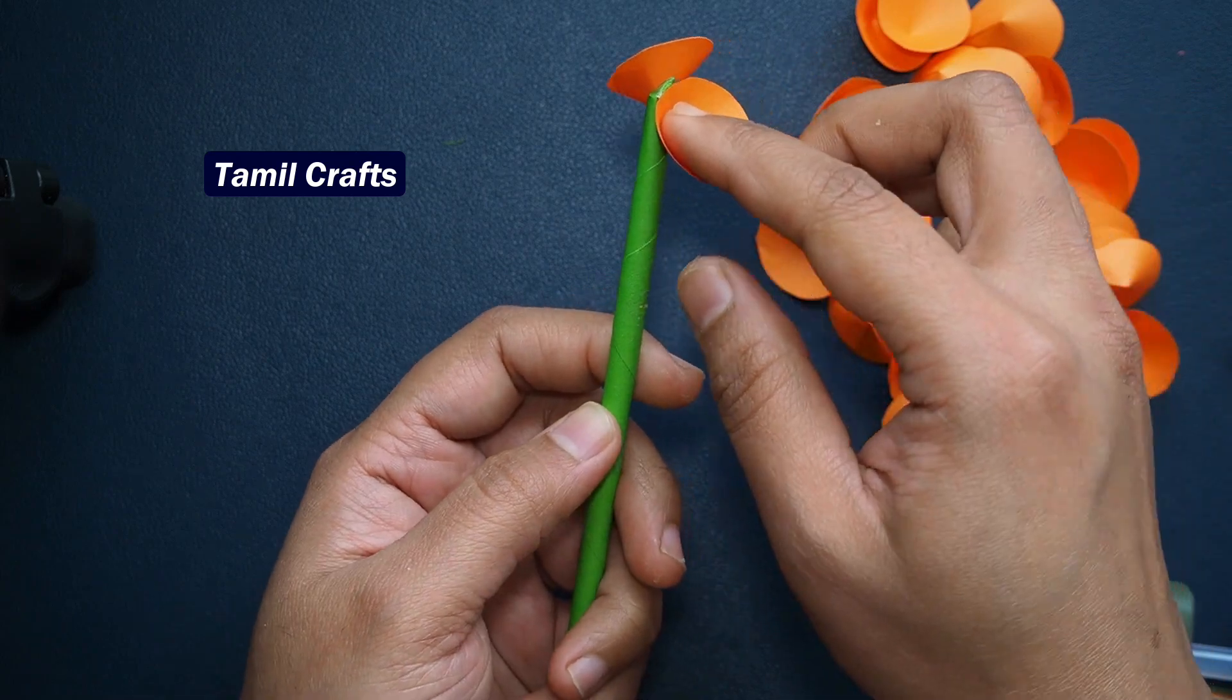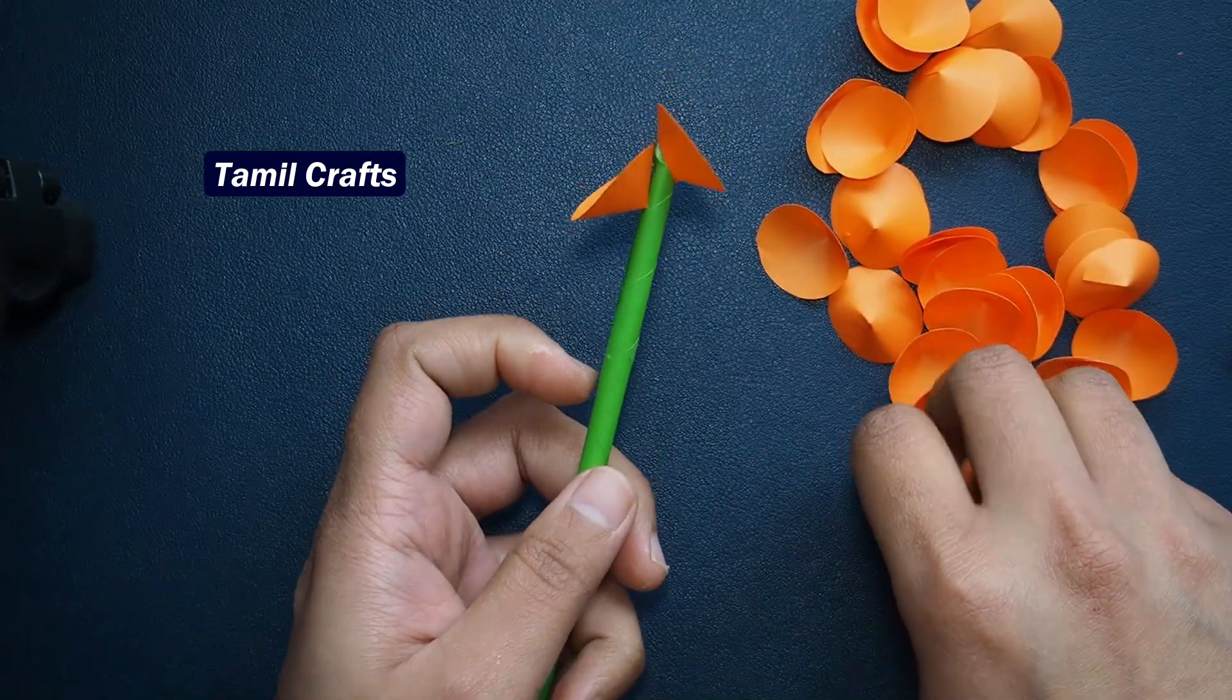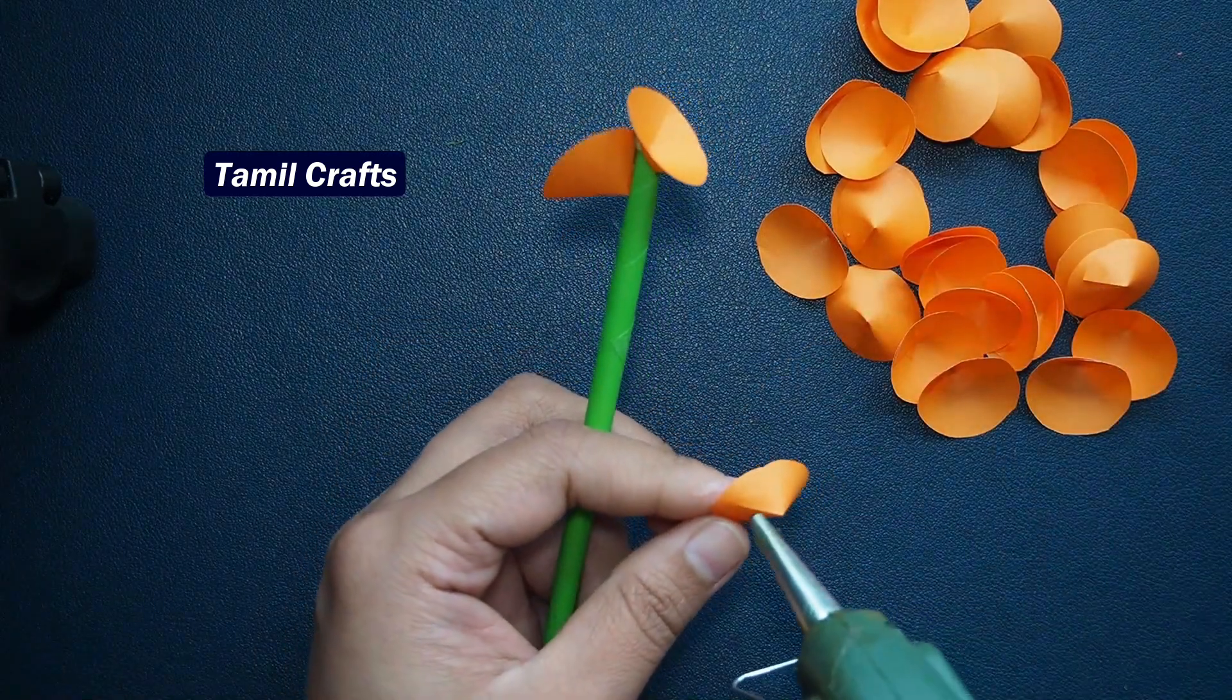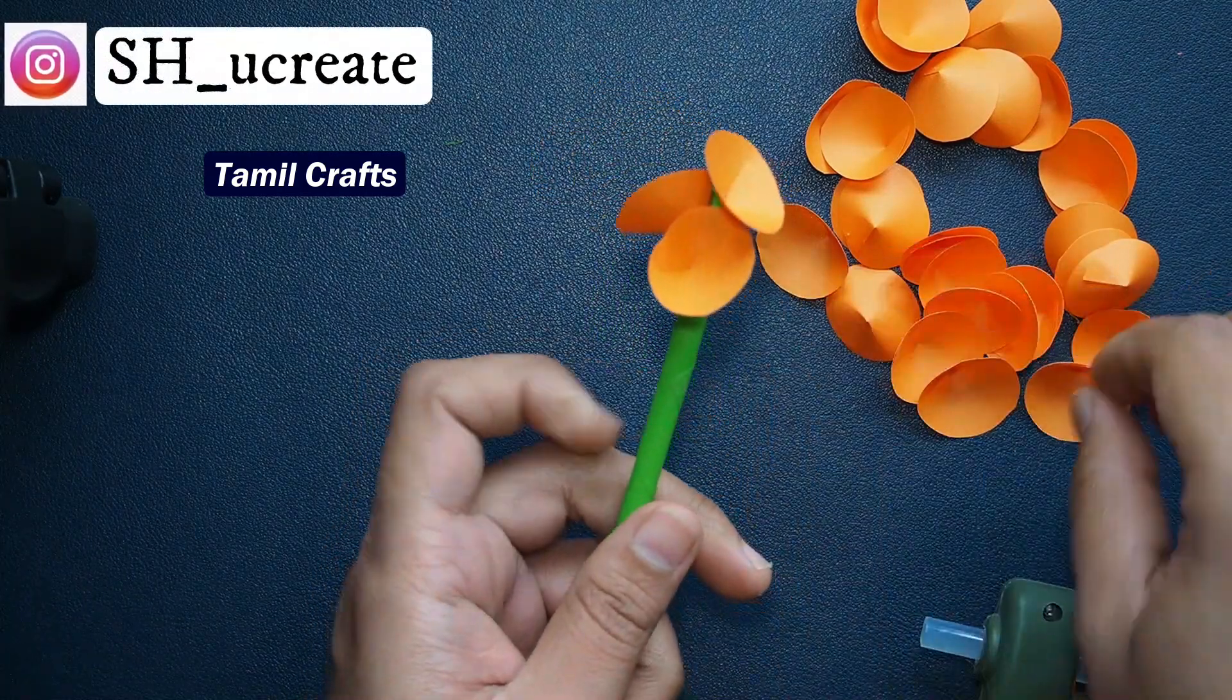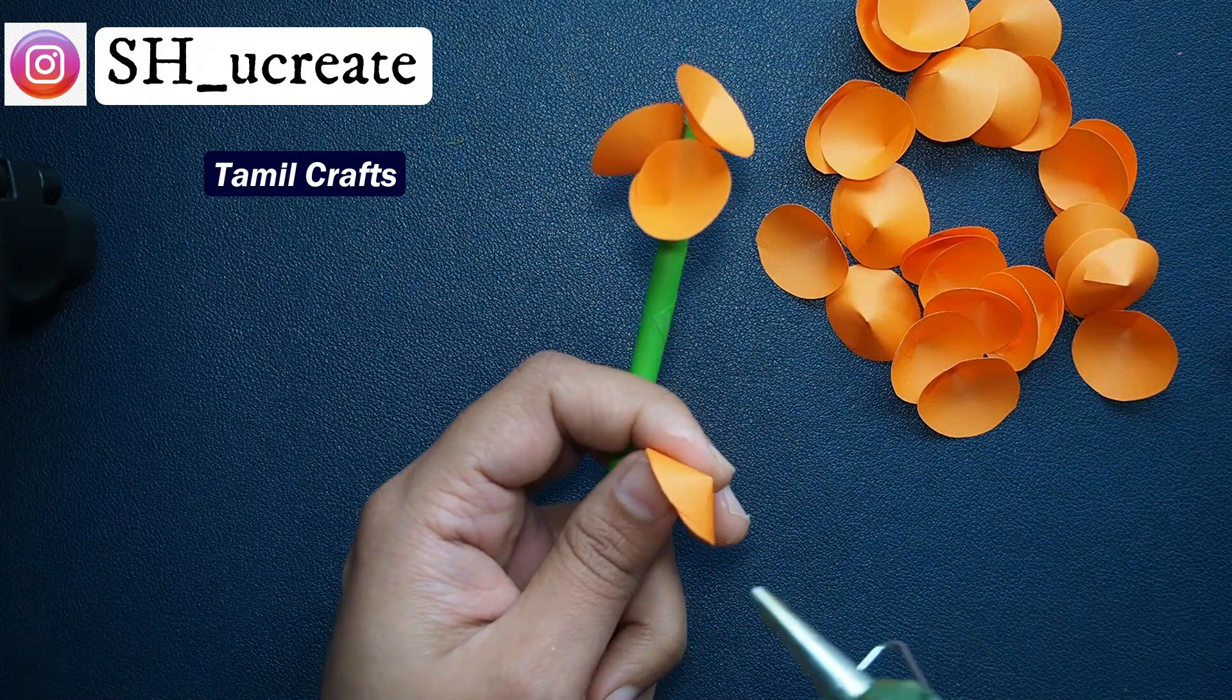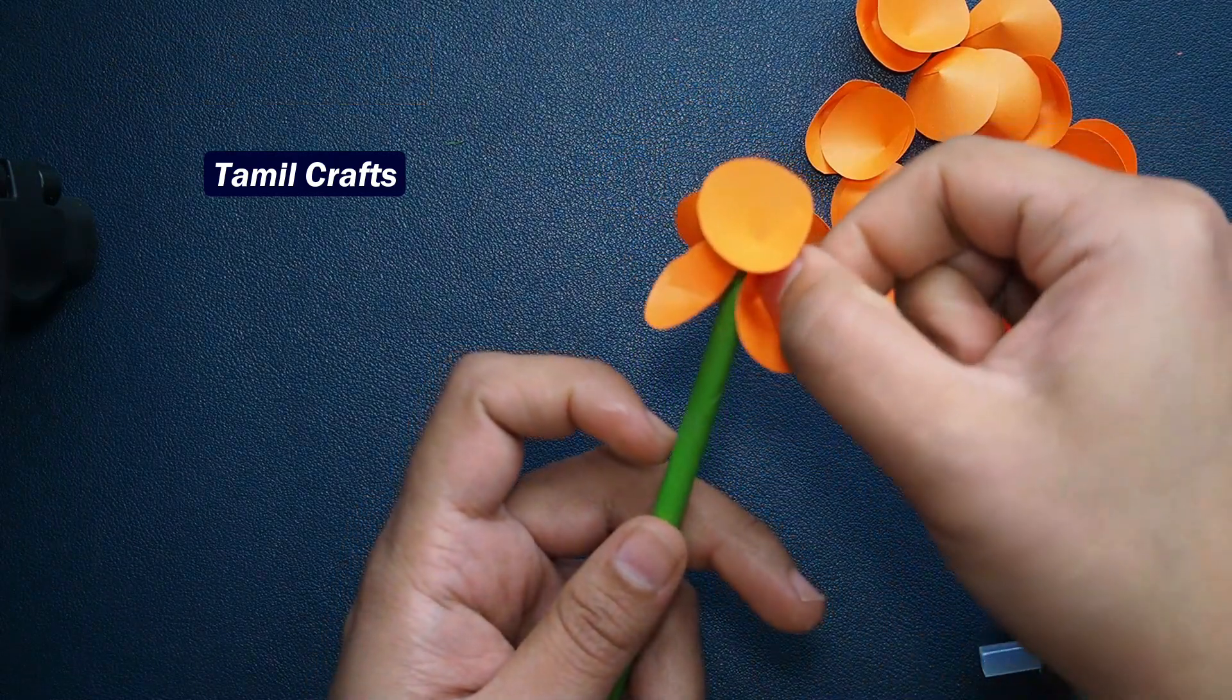Attach it to the joint and secure it on the green color stick. Put it on top like this.